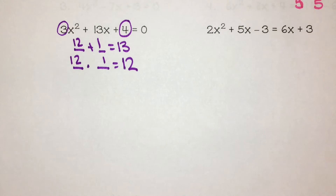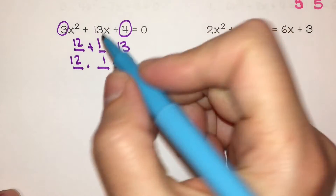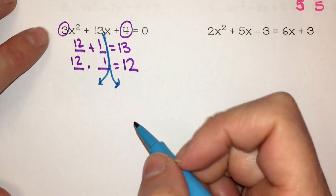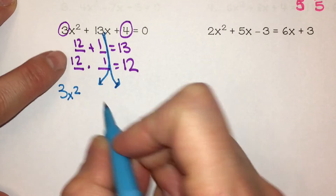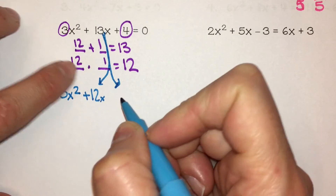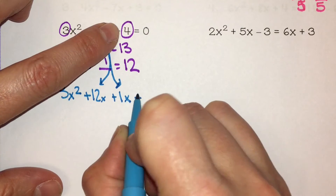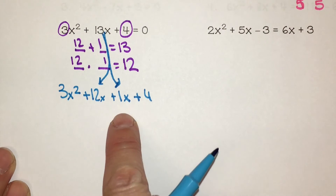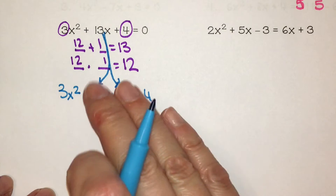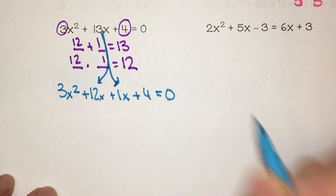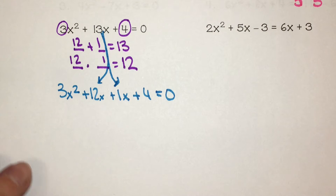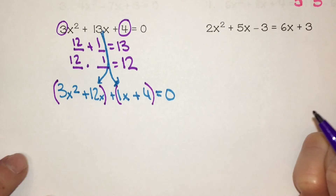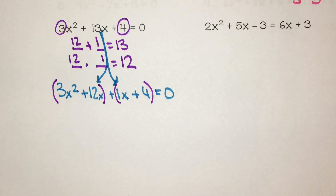All that does is split that middle term into 2. I bring down my 3x squared, then I have plus 12x plus 1x, and bring down the plus 4. If I combine 12x plus 1x, that's 13x — so all I did was split that apart — and it equals 0. I'm going to put parentheses around my first two terms and around my second two terms, with a plus in the middle. Now I'm going to factor the greatest common factor out of both groups.